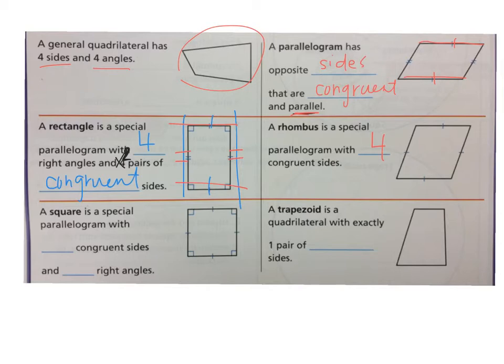A square is a special parallelogram with four congruent sides and four right angles. So a square is just like a rectangle, but instead of having two pairs of congruent sides, all four sides are congruent.